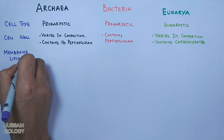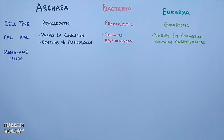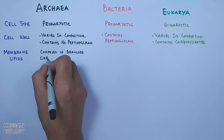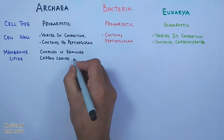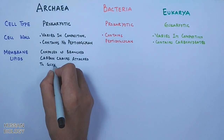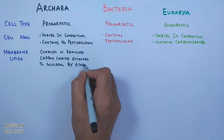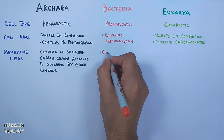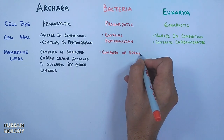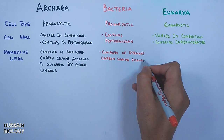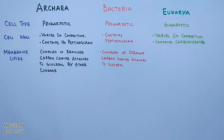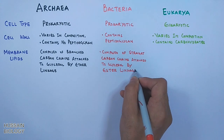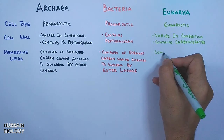Now let's compare the membrane lipids. In Archaea, the membrane is composed of branched carbon chains attached to glycerol by ether linkage. In Bacteria, the membrane is composed of straight carbon chains attached to glycerol by ester linkage.